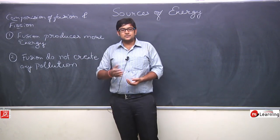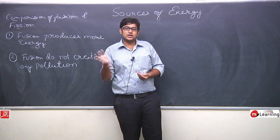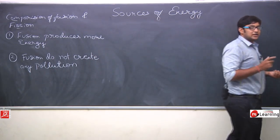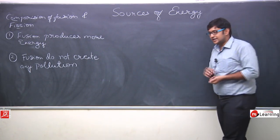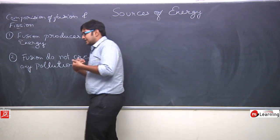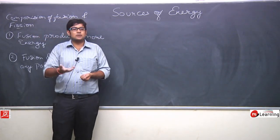But uranium ke hum baat kare, toh jab fission process hota hai, barium aur krypton jaise element form hote hain. Now barium and krypton ke hum ne kaha tha ki these are radioactive elements ya radiations release karte hain, jisse ki biological organisms ko kaafi zyada problem ho sakti hai.